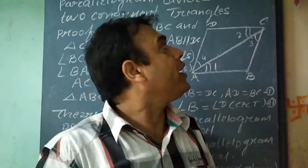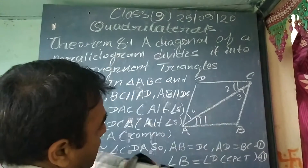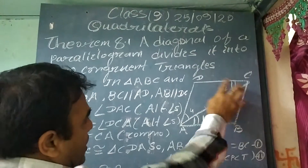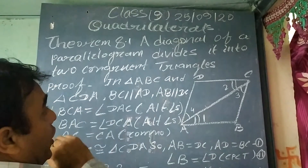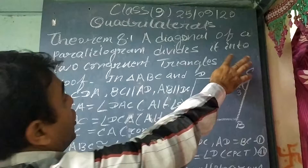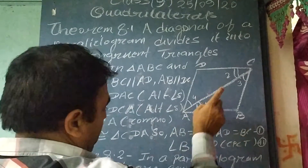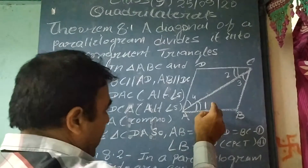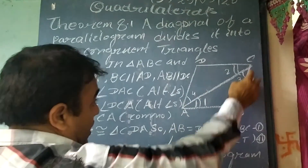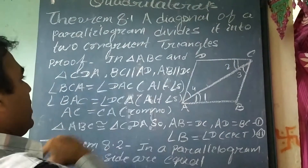Good morning students. Today in class 9, we are going to prove theorem 8.1. Here you can see ABCD is the parallelogram, in which the diagonal of a parallelogram divides it into two congruent triangles. This is a parallelogram and diagonal AC divides it into two congruent triangles, that is triangle ABC and triangle CDA, as you can see here.